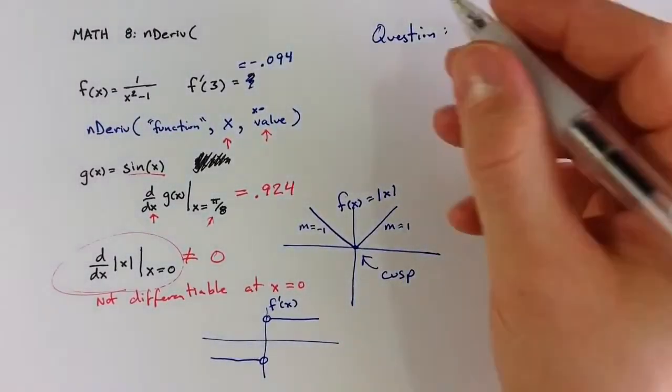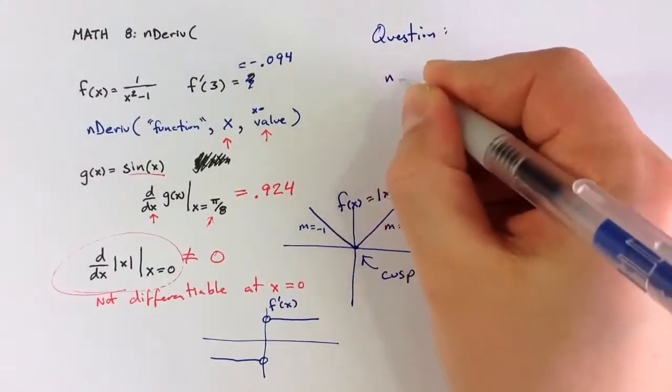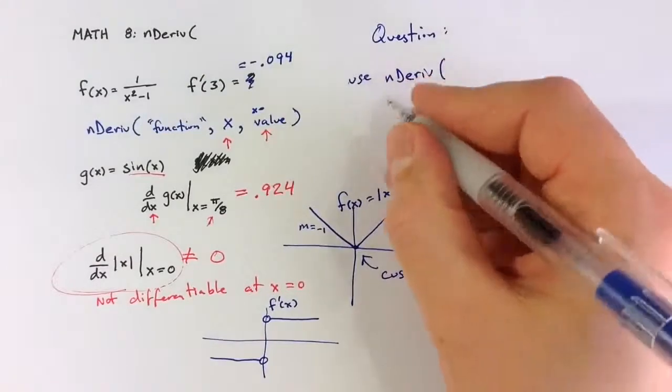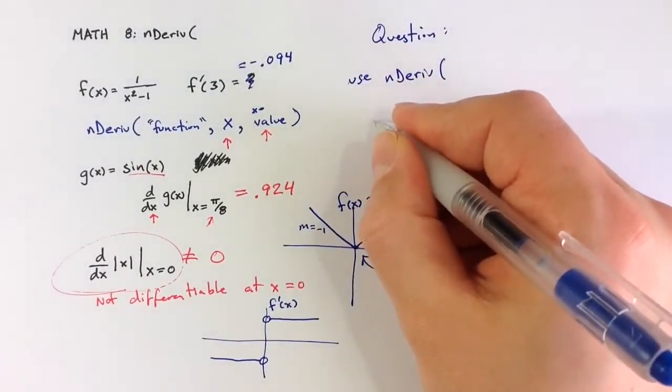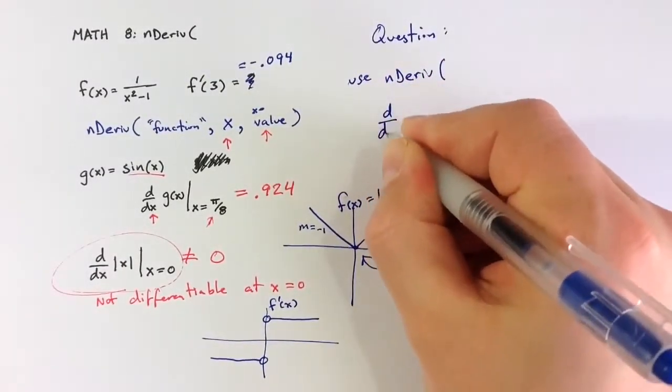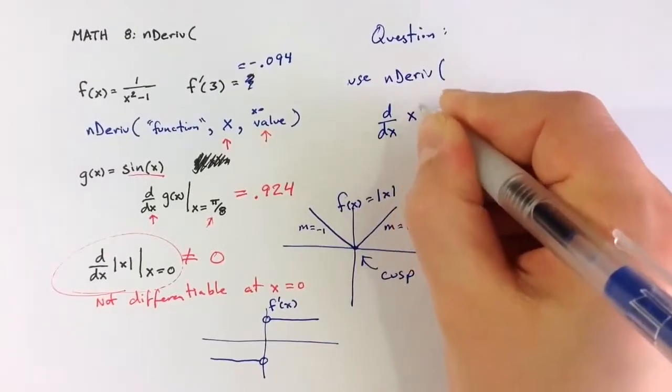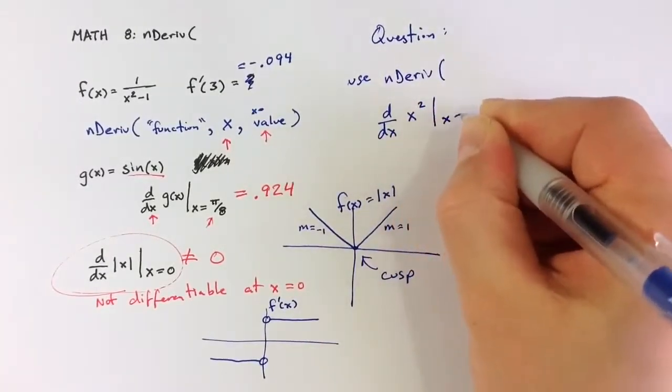From what you've seen in the video, try to use the nderive command to find the derivative—let's say something that we know—try to find the derivative using the nderive command of x squared when x equals 4.